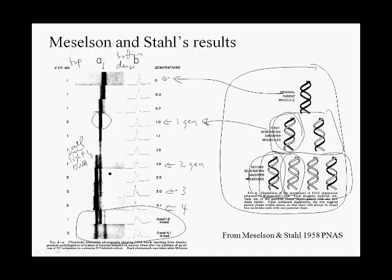The key is that their results also disproved and were completely inconsistent with the conservative model and the dispersive model. Think about what results the conservative model predicted and what results the dispersive model predicted, and how the actual data is inconsistent with the predictions from these alternative models.